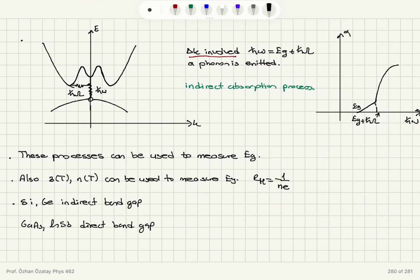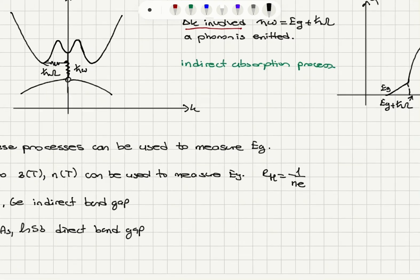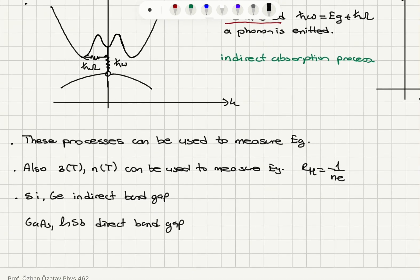These processes can be used to measure the band gap. By changing the frequency of the incoming photon and looking at the absorption coefficient, we can determine the band gap. Also, by looking at conductivity as a function of temperature and electron concentration as a function of temperature, we can determine the band gap. If you remember, the Hall effect and the Hall coefficient give us the carrier concentration n, so we can use the Hall coefficient to determine changes in carrier concentration and identify when we have reached the band gap energy.